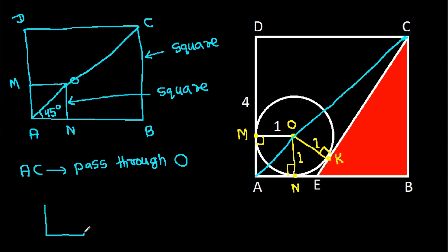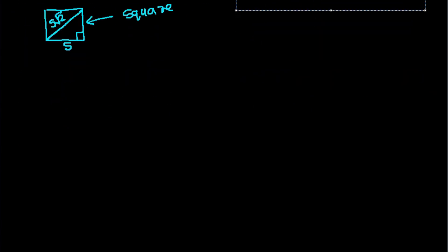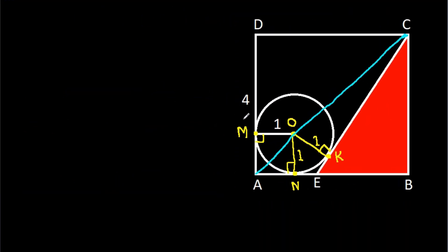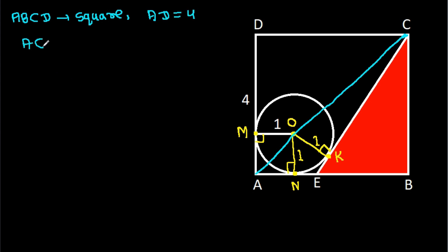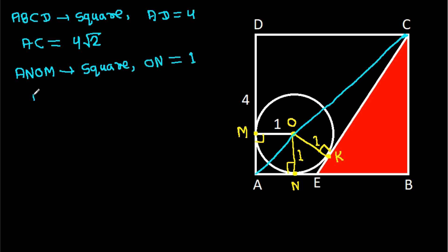In any square, if the side is s, then the diagonal is s times √2. Here ABCD is a square with AD = 4, so AC = 4√2. And ANOM is a square with ON = 1, so AO = 1·√2 = √2.